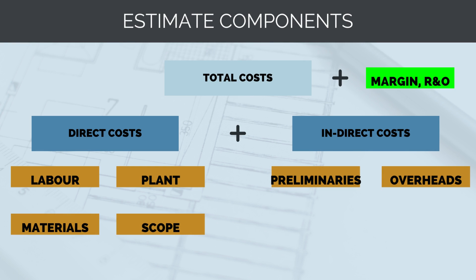Let's now look at what our cost estimate is made up of. Firstly, we've got our project costs. There are two types of costs: direct costs and indirect costs. Direct costs are costs directly related to the delivery of project scope, like the cost of asphalting a road or pouring a concrete foundation. Indirect costs are costs not directly related to a scope, but necessary to keep the project running, like management staff, site offices, security at night, and so on.